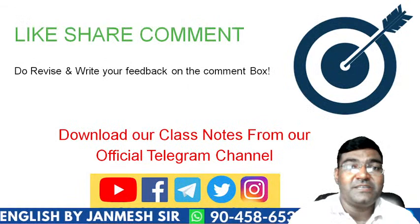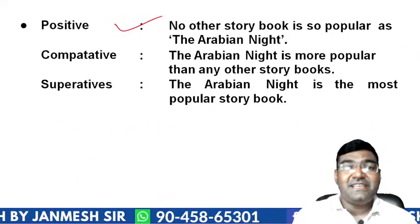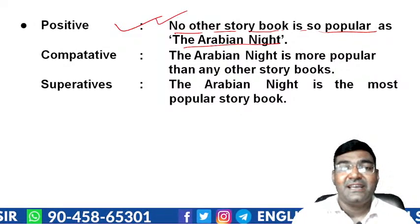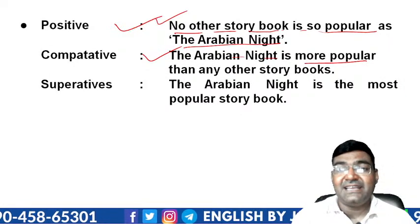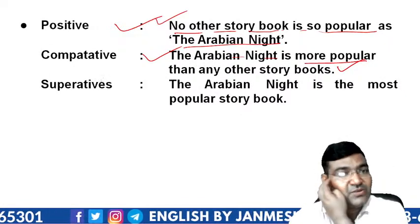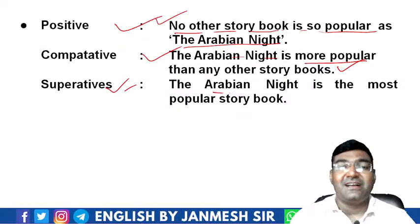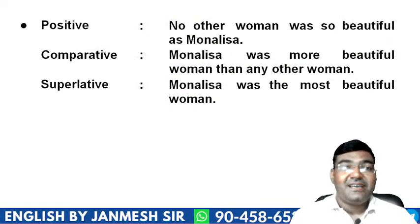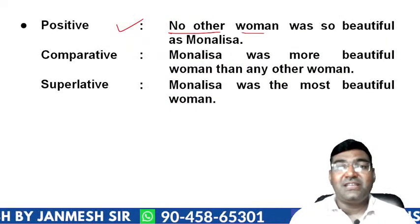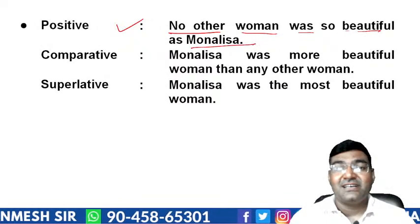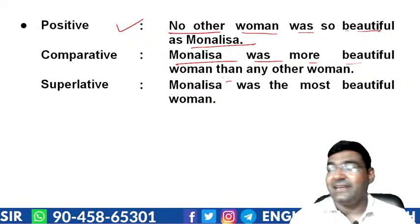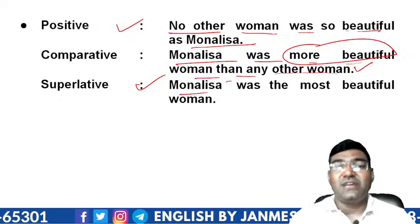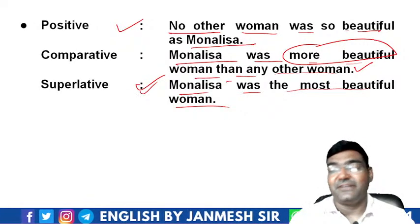Final degree examples. Positive: 'No other story book is so popular as the Arabian Nights.' Comparative: 'Arabian Nights is more popular than any other story book.' Superlative: 'Arabian Nights is the most popular story.' And: Positive — 'No other woman was so beautiful as Mona Lisa.' Comparative — 'Mona Lisa was more beautiful than any other woman.' Superlative — 'Mona Lisa was the most beautiful woman.'